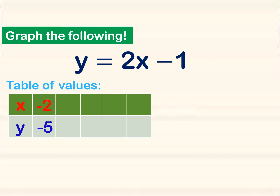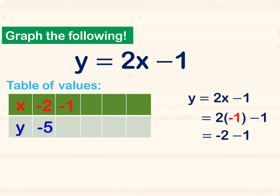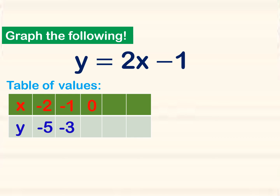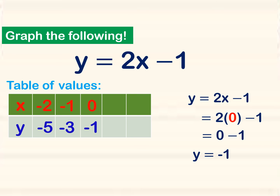When x is equal to negative 1, we copy the equation and substitute: 2 times negative 1 is negative 2, and negative 2 minus 1 is negative 3. So when x is equal to negative 1, y is equal to negative 3. When x is equal to 0, we substitute: 0 times 2 is 0, and 0 minus 1 is negative 1.